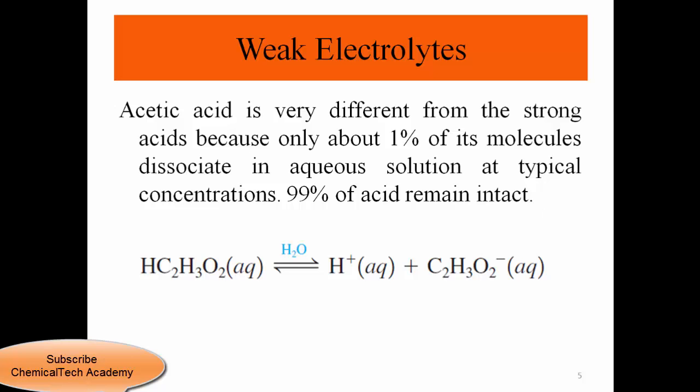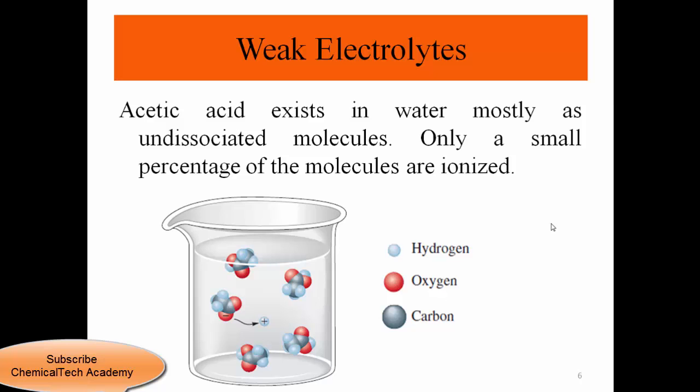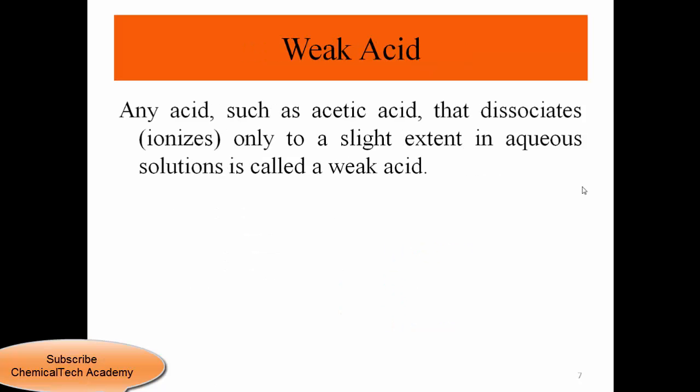Acetic acid exists in water mostly as undissociated molecules — only a small percentage of the molecules are ionized, as shown here where we mostly see acetic acid in its original molecular form. Any acid that dissociates only to a slight extent in aqueous solution is called a weak acid. Similarly, ammonia is called a weak base and results in a weak electrolyte, as most of its molecules remain intact.